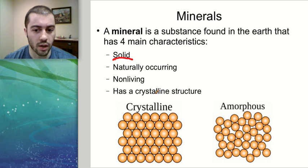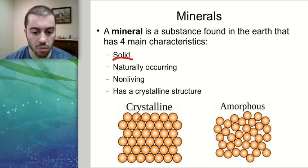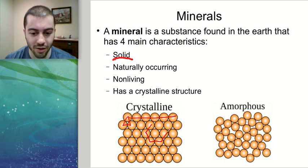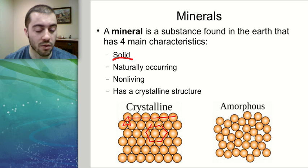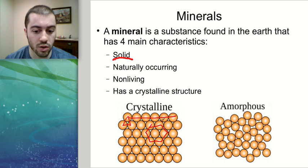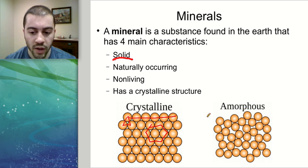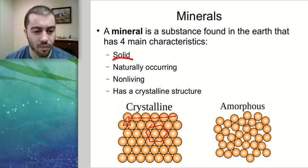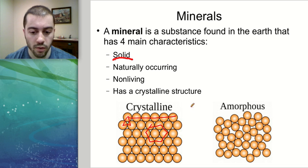The last characteristic is that a mineral needs to have a crystalline structure — a solid structure with an ordered, repeating pattern. We can see geometric shapes like triangles, lines, and hexagons in it. In order to be a mineral, something has to have this crystalline structure, as opposed to something that is amorphous, which has random particles with no repeating pattern.